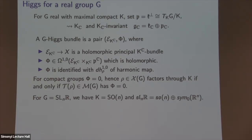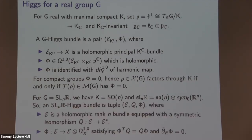For SL(N,ℝ), the maximal compact is SO(N), and the Lie algebra decomposes as skew-symmetric plus symmetric matrices. An SL(N,ℝ) Higgs bundle is a triple (E, Q, φ), where E is a rank N holomorphic vector bundle equipped with an orthogonal structure — a symmetric isomorphism between E and its dual — with trivial determinant. The Higgs field φ is a holomorphic map from E to E⊗K which is symmetric with respect to the orthogonal structure.